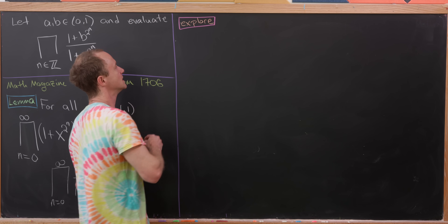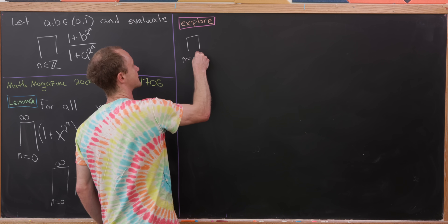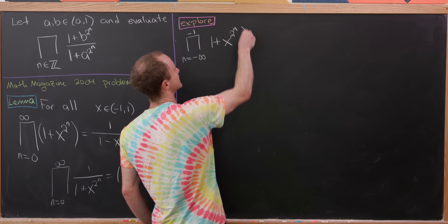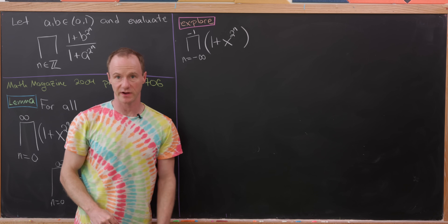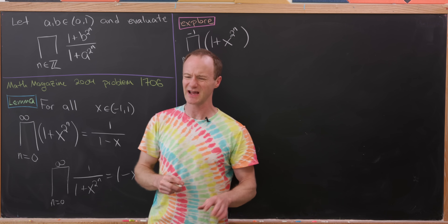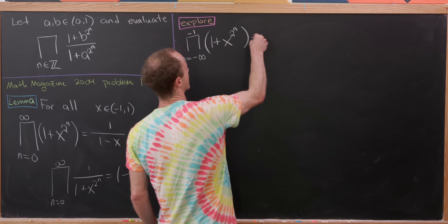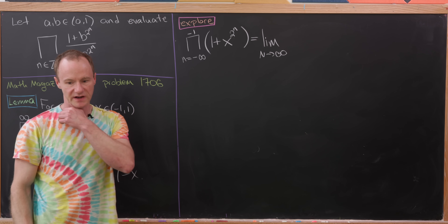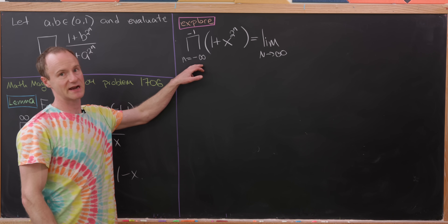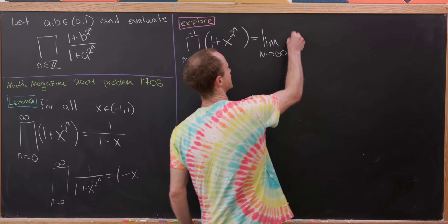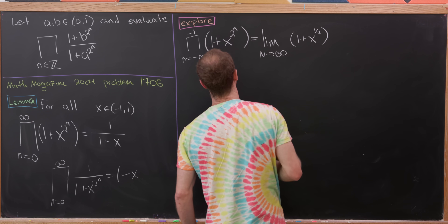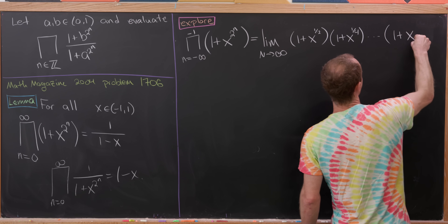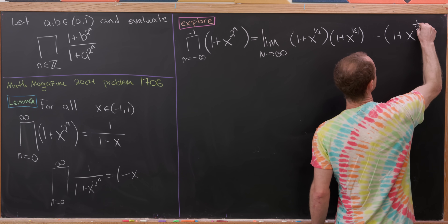Let's look at the product as n goes from minus infinity up to minus 1 of (1 + x^(2^n)). If we can get an idea of what's going on here, we can play with the numerators and denominators kind of separately. I'm going to rewrite this as a limit of a partial product — the limit as N goes to infinity of the product as n goes from −N to −1. That looks like (1 + x^(1/2))(1 + x^(1/4)) all the way down to (1 + x^(1/2^N)).